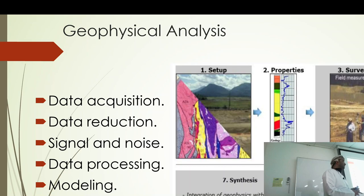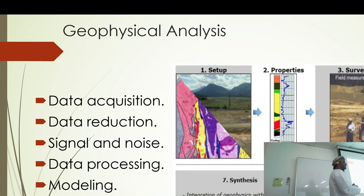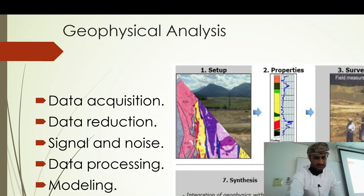Gravity technique is a geophysical technique that measures variation in the Earth's gravitational field. Although the average value is 9.8 m/s², it is well known in geophysics that the Earth's gravitational field varies from one location to another. Let me just double-check if I'm recording — yes, everything is working fine.